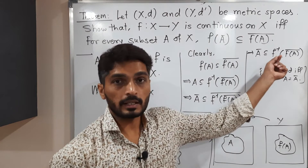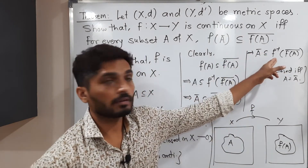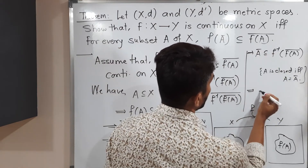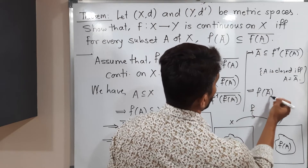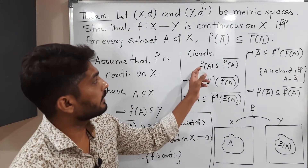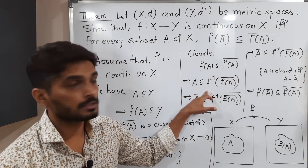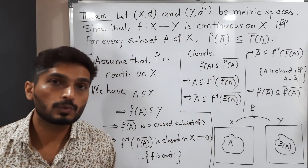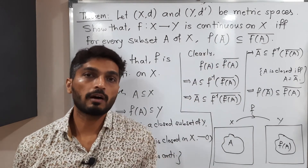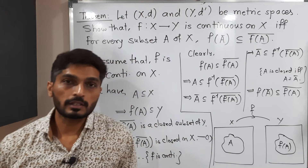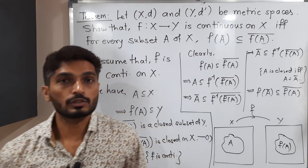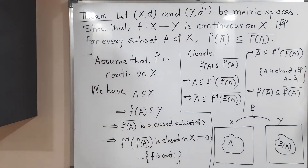Now, taking f back to the left-hand side (moving f⁻¹ back gives f), we obtain f(Ā) ⊆ f(A)̄. So in this way, we have proved the forward direction: by assuming f is continuous, we have proved the condition f(Ā) ⊆ f(A)̄ for any subset A of X. Half of the proof is done. Now we must assume this condition and prove that f is continuous on X.